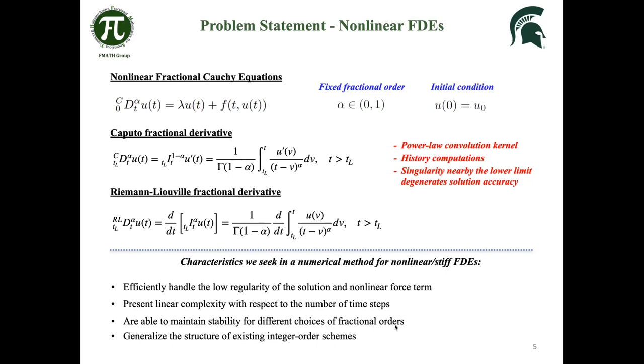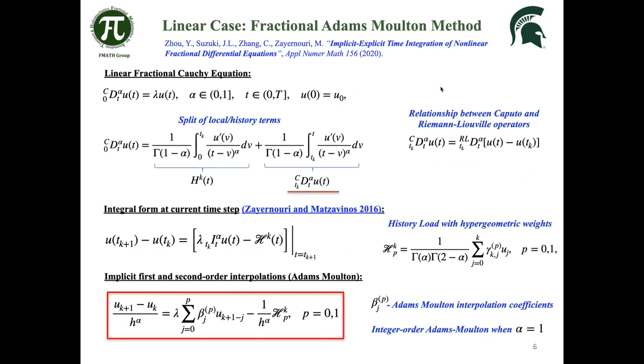The approach that we take is we start with a fractional Adams-Moulton method that we develop for the linear case. Here we don't have a nonlinear force term on the right-hand side. The main idea of building up this method is to first start with a split of this fractional Caputo operator. So we split it into a local and a history part.